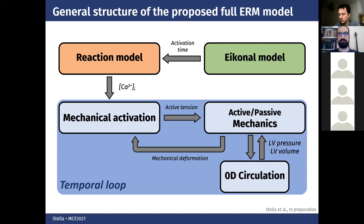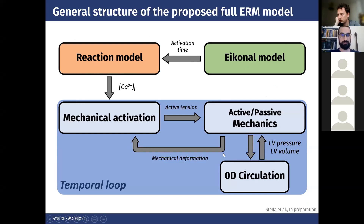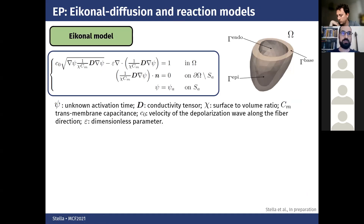This is the general pipeline of the model. At the top we have the electrophysiology part: the classical eikonal model, which gives the activation time to the reaction offline model, which gives the calcium concentration to the temporal loop — the mechanical part, coupled with a zero-D circulation model. Now I want to go into details of all these models, starting from the eikonal diffusion model, in which the unknown is the activation time of the ventricle.